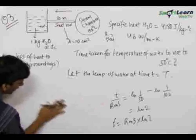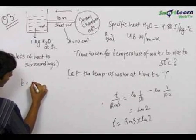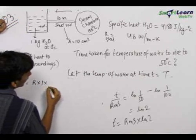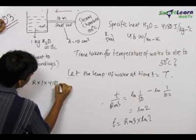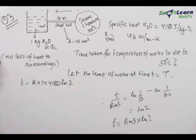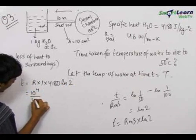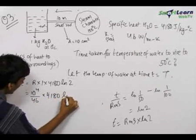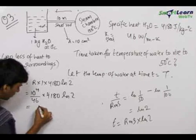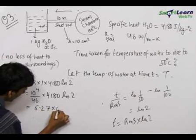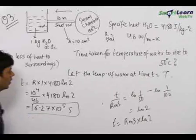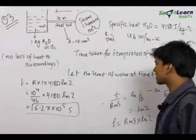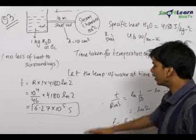Now we just need to feed in the values. T = R × m × s × ln(2). The mass of water is 1 kg, the specific heat of water is 4180 J/kg°C, and R = 10⁴/46. Multiplying these together gives a final answer of 6.27 × 10⁵ seconds. So the time taken for the temperature of water to rise to 50°C is 6.27 × 10⁵ seconds.